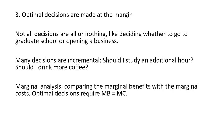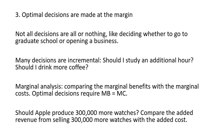Marginal analysis requires comparing the marginal benefits with the marginal costs. Optimal decisions require doing something up until the point where the marginal benefit of the last unit just equals the marginal cost. Should Apple produce 300,000 more watches? Marginal analysis says compare the added revenue, or marginal revenue, from selling 300,000 more watches with the added cost of producing 300,000 more watches — and that added cost would be referred to as the marginal cost.